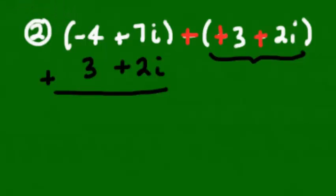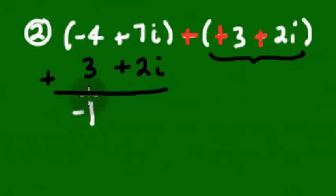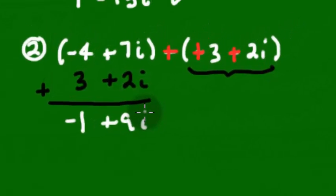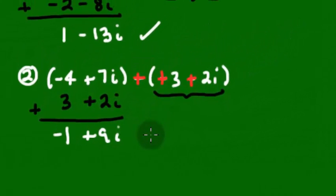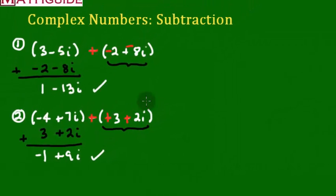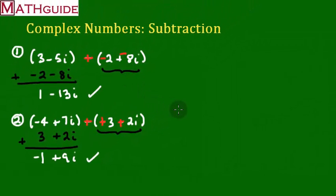Now we're going to add the two polynomials together, combining like terms and being careful with our positives and negatives. Negative 4 and 3 makes a negative 1. And we have 7 and 2, which makes 9 — so 9i. And there you have it — that's our final answer. That's how we subtract complex numbers.